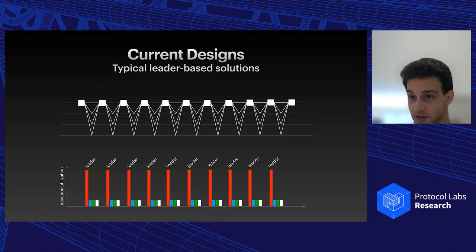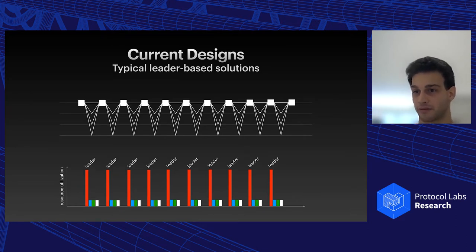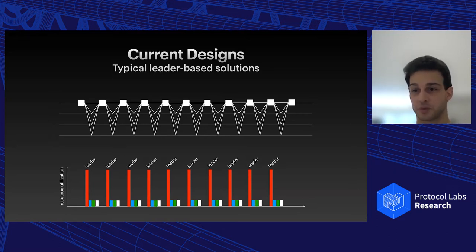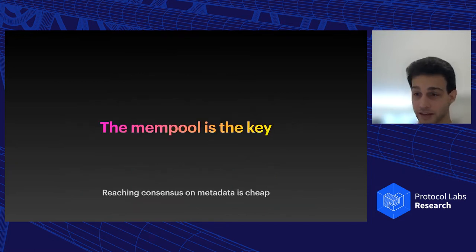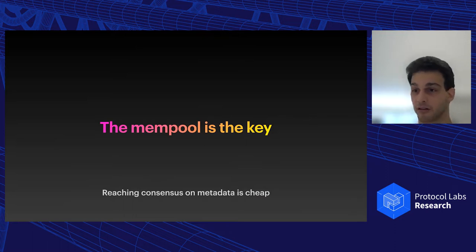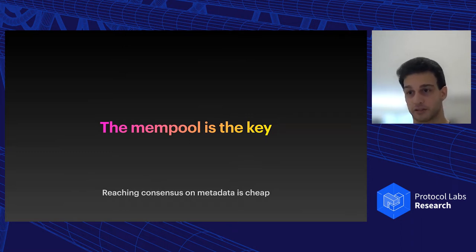Because it's a blockchain the leader rotates, meaning all machines need to be over-provisioned while only one of them at any single time uses full capacity. What we want is every machine utilized at maximum capacity all the time. After a lot of work, we realized that the mempool is actually the key: reaching consensus on metadata — if those are small — is very cheap, and message complexity doesn't matter much for consensus if the mempool already did the bulk of the work and shifted all the data around.